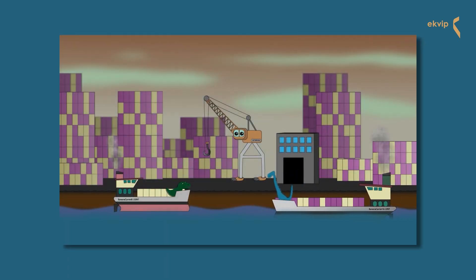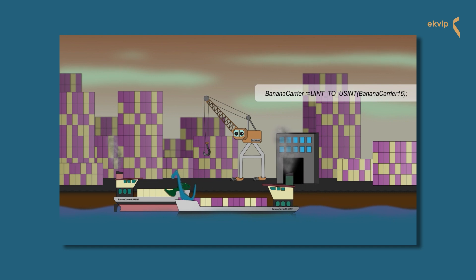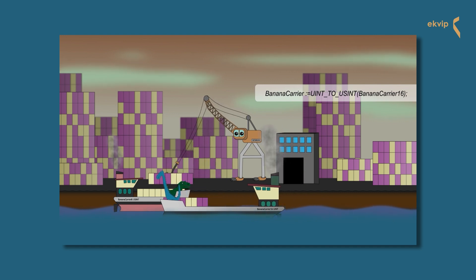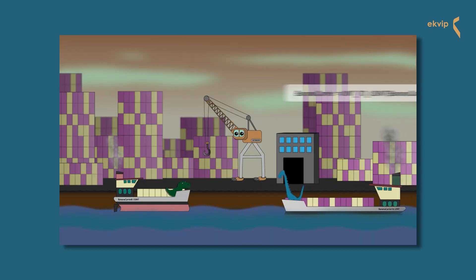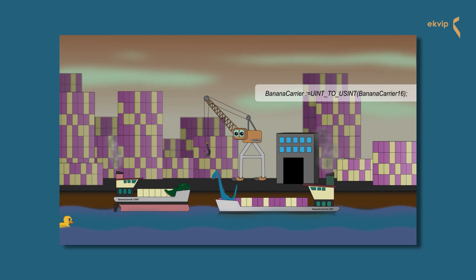In this case it works easily because BananaCarrier16 has been assigned a value of 241. This amount of bananas fits in BananaCarrier8.